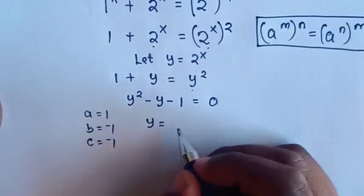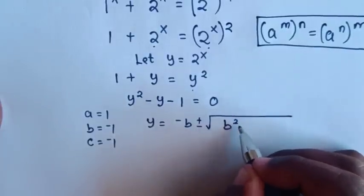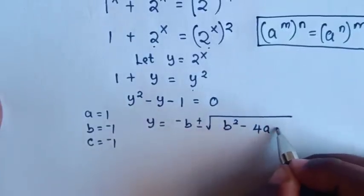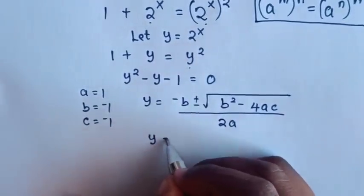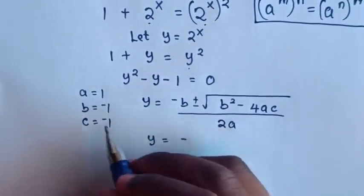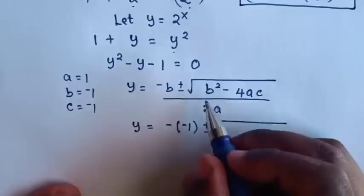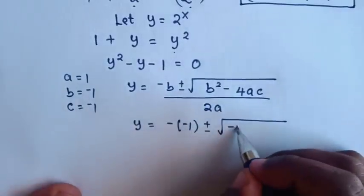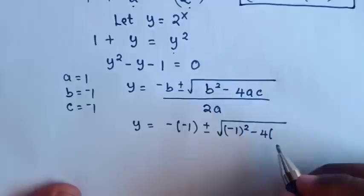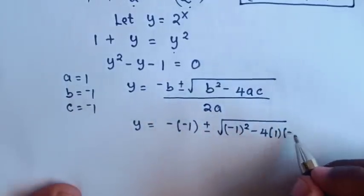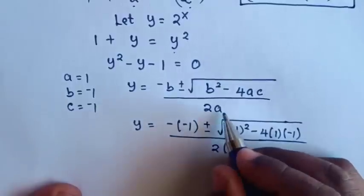From the quadratic formula, y is equal to negative b plus or minus square root of b squared minus 4ac, over 2a. Then y is equal to negative of negative 1, plus or minus square root of negative 1 squared, minus 4 times a, which is 1, times c, which is negative 1, over 2 times a, which is 1.